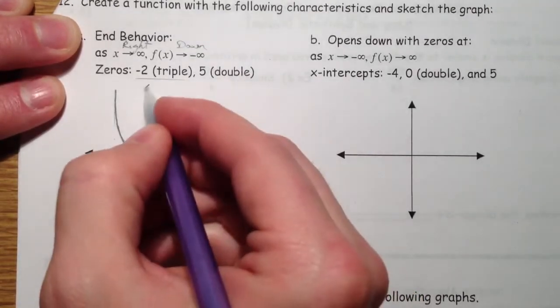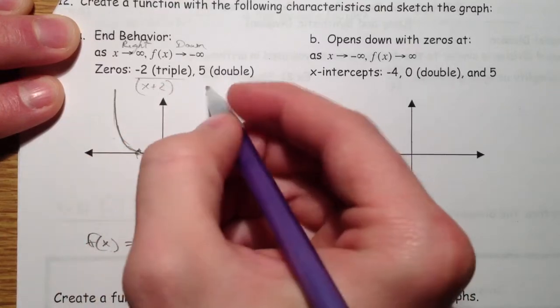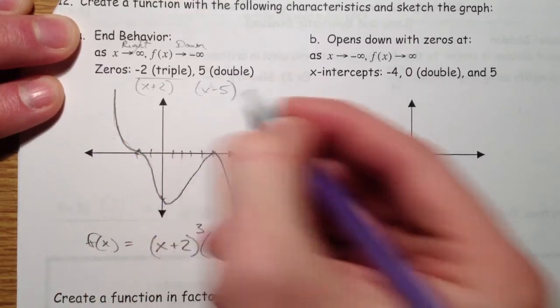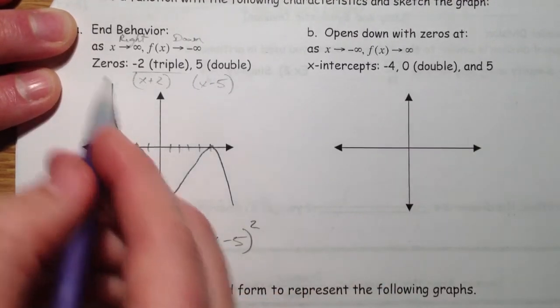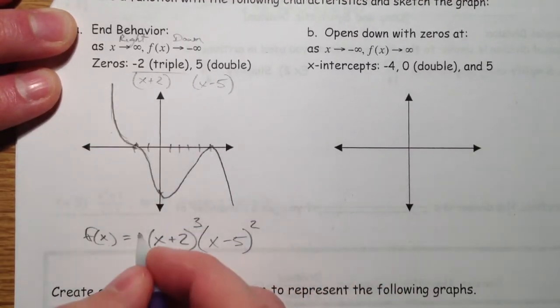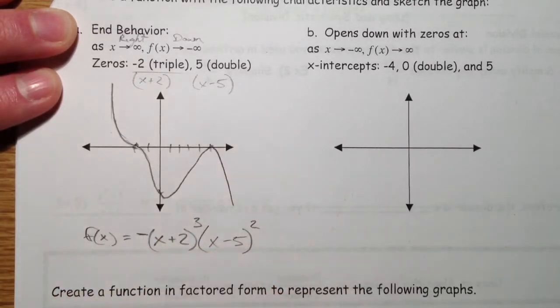So remember, this is x plus 2 as a factor. x minus 5. And x minus 5 is being squared. So 1, 2, 3, 4, 5. And that makes sense because we have an odd degree. And because it's going down and to the right, it's just like a negative line. And so we need that.